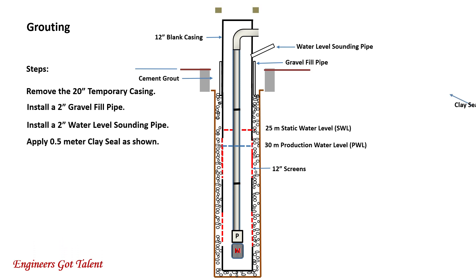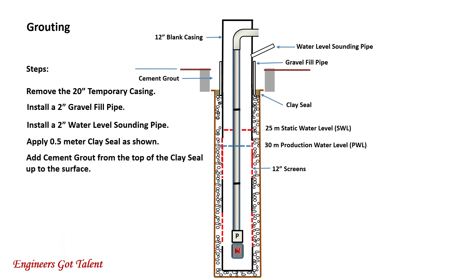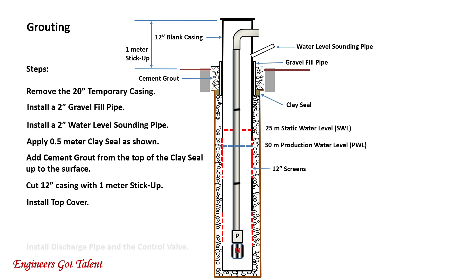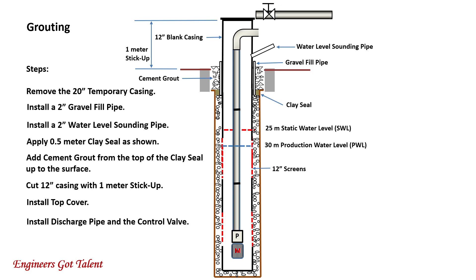A half-meter clay seal is applied, then a concrete cement is poured as cement grout above the clay seal that runs up to the surface. Then, cut the 12-inch casing with a 1-meter stick-up. A steel cover is welded on top of the 12-inch casing. Lastly, a discharge pipe and a control valve are installed.